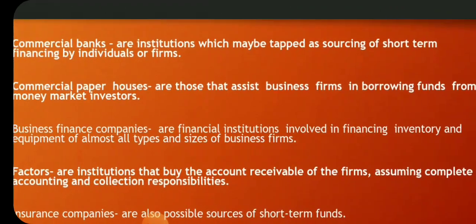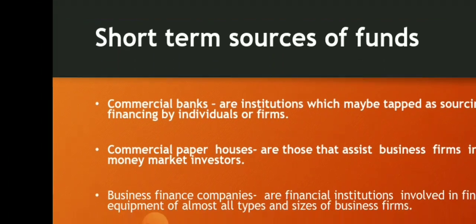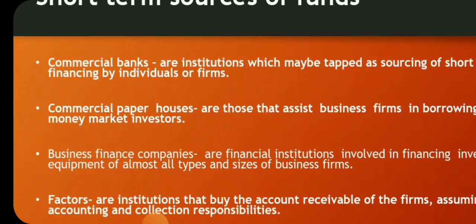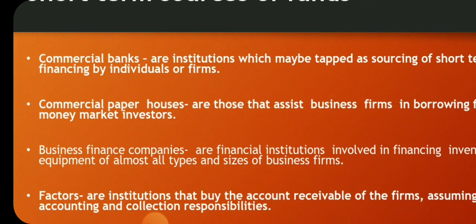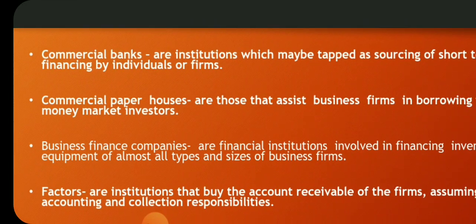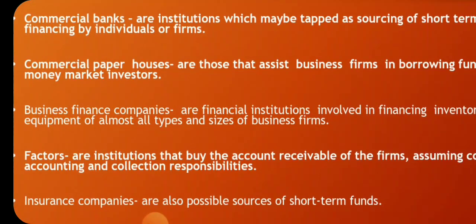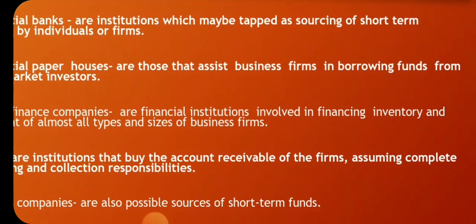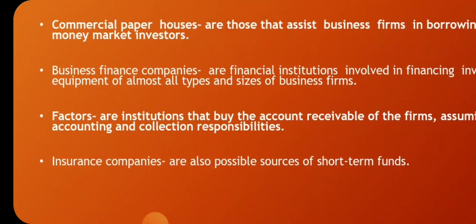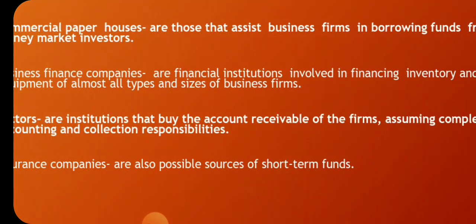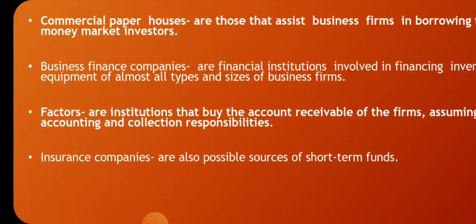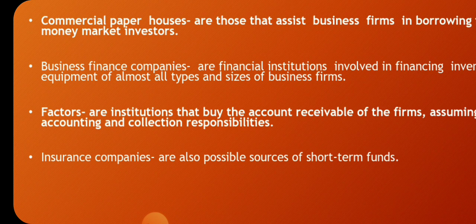The commercial bank is an institution that may be tapped as a source of short-term financing by individuals or firms. Commercial paper houses are those that assist business firms in borrowing funds from money market investors. Business finance companies are financial institutions involved in financing inventory and equipment for businesses of all types and sizes. Factors are institutions that buy the accounts receivable of firms, assuming complete accounting and collection responsibilities. Insurance companies are also possible sources of short-term funds.